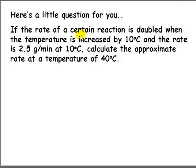Here's a question for you. If the rate of a certain reaction is doubled when the temperature is increased by 10 degrees, and the initial rate is 2.5 grams per minute at 10 degrees, calculate the approximate rate at a temperature of 40 degrees. Try this on your own and then resume the video to check the solution.